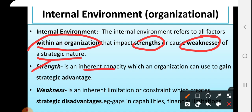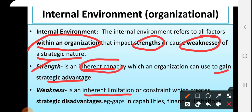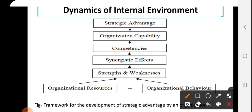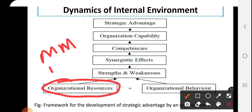Strengths are inherent capacities which an organization can use to gain strategic advantages, and weaknesses are inherent limitations. This is the dynamic of internal business environment. Every business or every organization contains organizational resources like man, money, machines, materials, then management and other things — various tangible or intangible resources or inputs. Finance is also one kind of resource for the company, as is manpower.